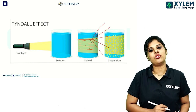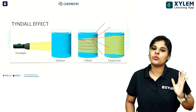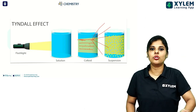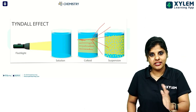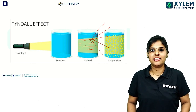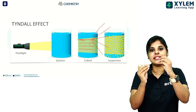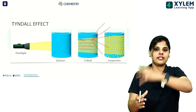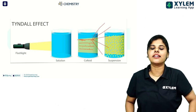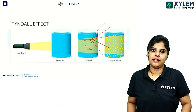In a true solution, the particles are too small and light is not scattered. In colloids, the particles scatter the light — that is the Tyndall effect. In true solutions, there is no scattering, so the light beam path is not visible.